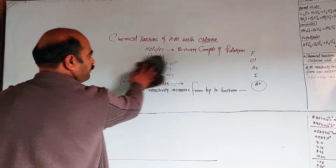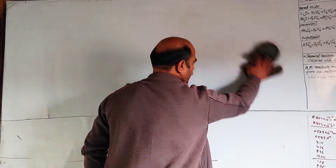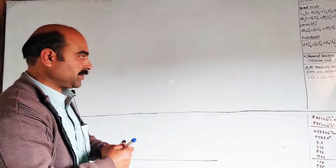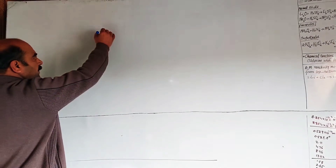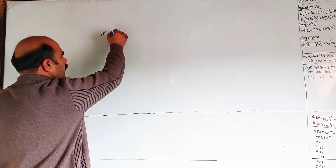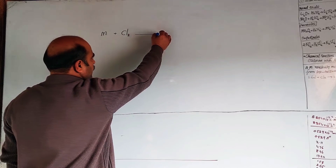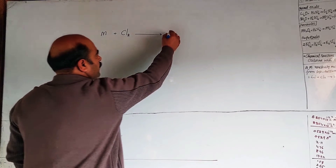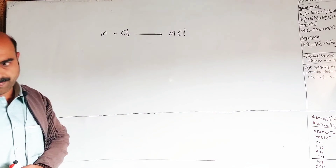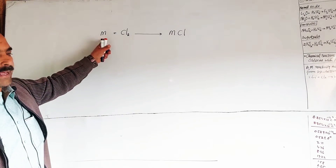The general formula: alkali metals plus halogens. Using symbols, alkali metals are represented by M, and chlorine is in diatomic state as Cl₂. The product formed is MCl — metal plus chlorine gives metal chloride (MCl).